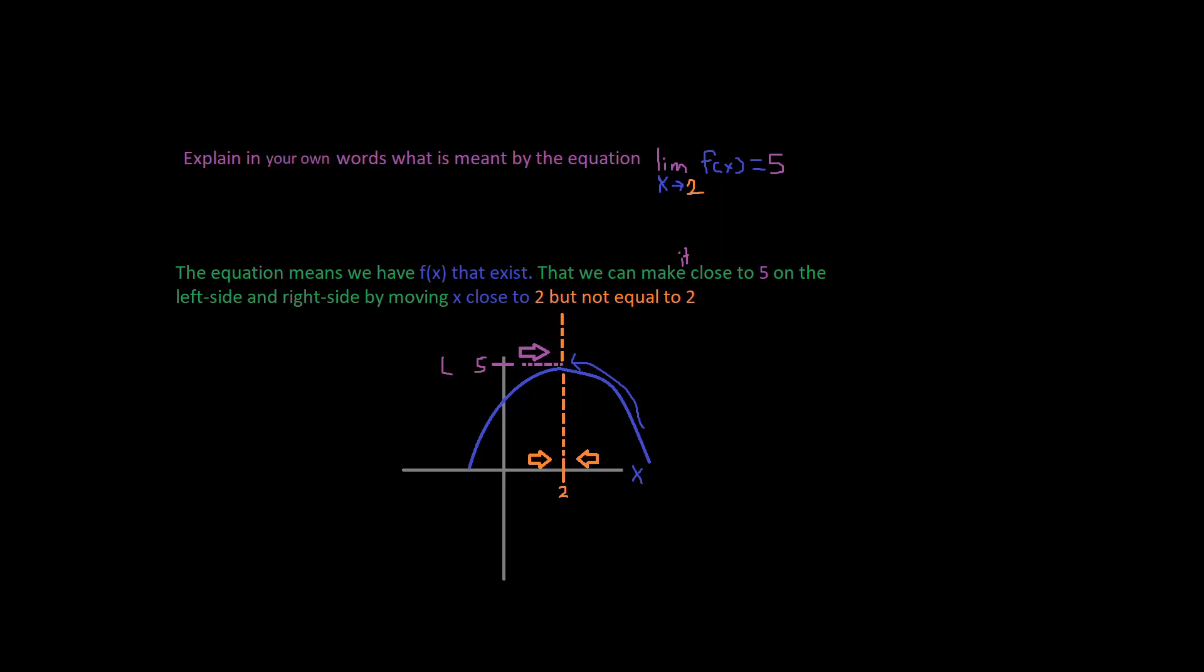which would be, what point would that be? 1, 2, 2, 5, right? That's the point that our limit meets up at. So this is how you should explain.